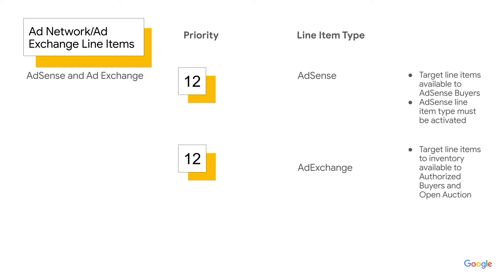Next on the priority list are ad network and ad exchange line items. These are used to target specific available inventory for authorized buyers and the open auction for ad exchange, and for AdSense buyers for AdSense. Google Ad Manager also allows activation of ad units for AdSense competition. The AdSense line item type must be activated for your Ad Manager network to use this option. You can learn more about AdSense backfill to Ad Manager in the Help Center link provided here.